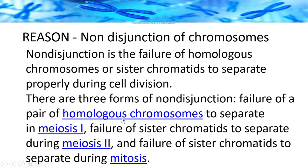If both chromosomes go to one daughter cell, that cell receives an extra chromosome. The second form is failure of sister chromatids to separate during meiosis II, which is similar to mitosis. If sister chromatids fail to separate, one daughter cell receives an extra chromatid while the other receives none. All these events can account for what is called chromosomal disorders.